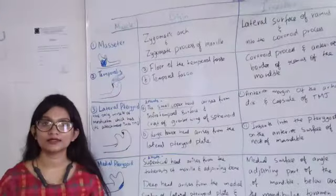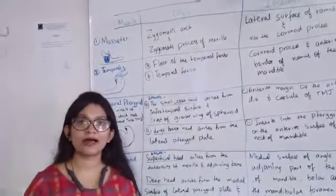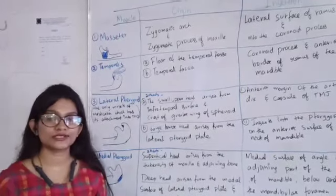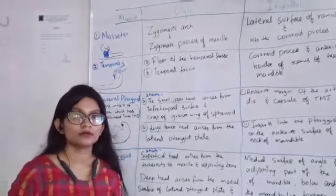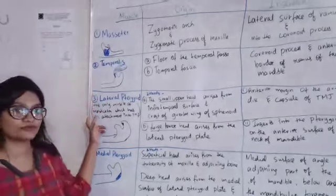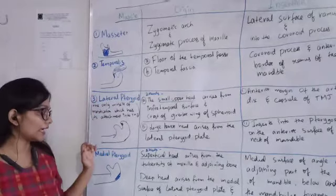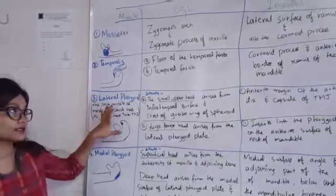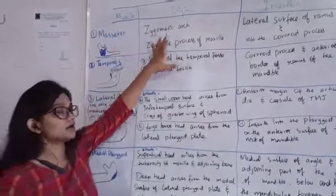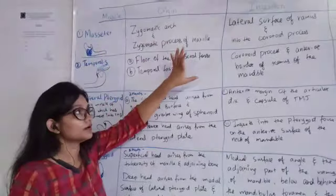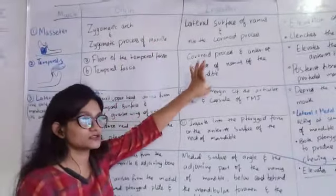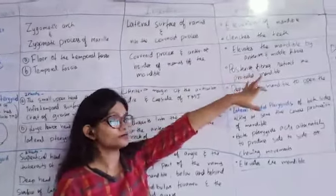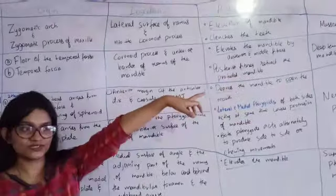Hello class, today we will study the Muscles of Mastication. There are 4 Muscles of Mastication: Masseter, Temporalis, Lateral Pterygoid and Medial Pterygoid. I will study each under the following headings: muscle, origin, insertion, action, and nerve supply.